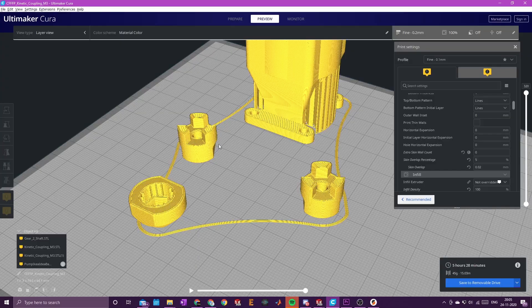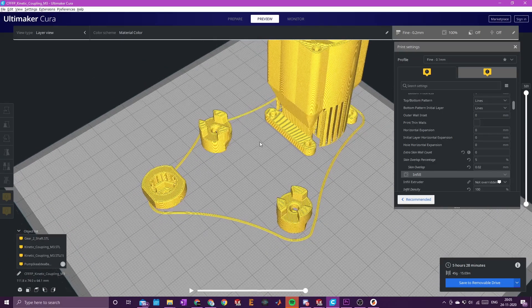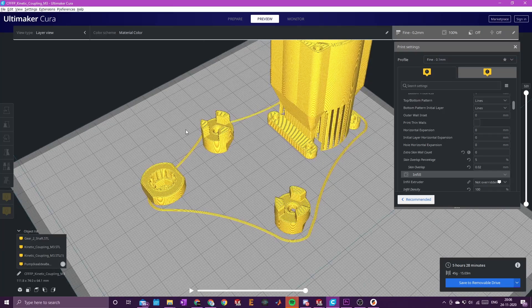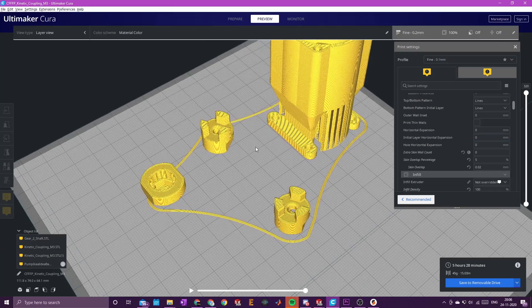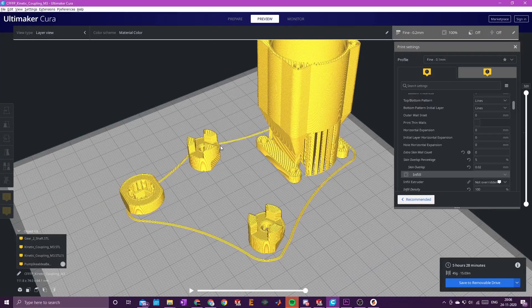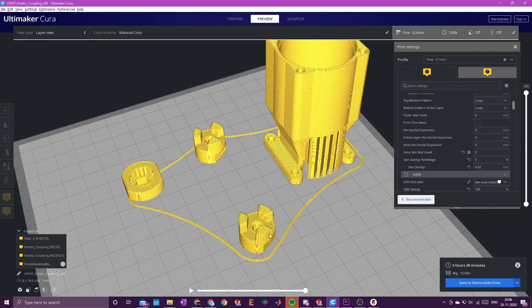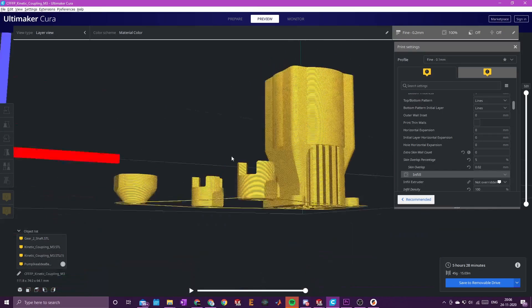The remaining two parts, these two couplings, should be fine as is and can be printed with your standard settings. Make sure you have your fan cranked up all the way because there are some overhangs, bridging, and supports.